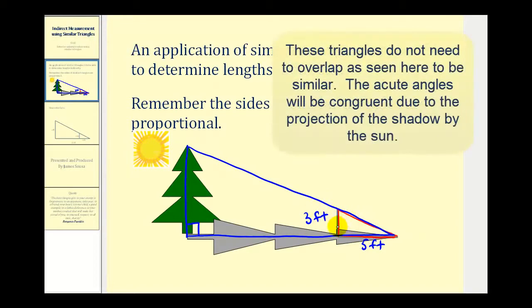And this large blue triangle would be similar to the small red triangle by angle, angle, angle similarity. They share this angle here and they also both contain a ninety degree angle which would also be congruent.